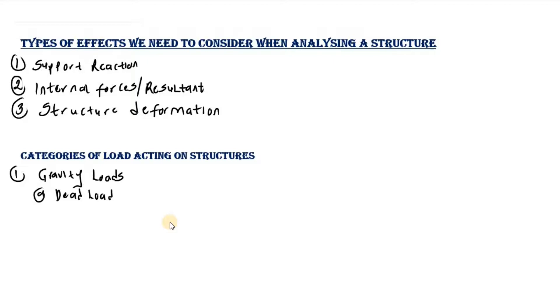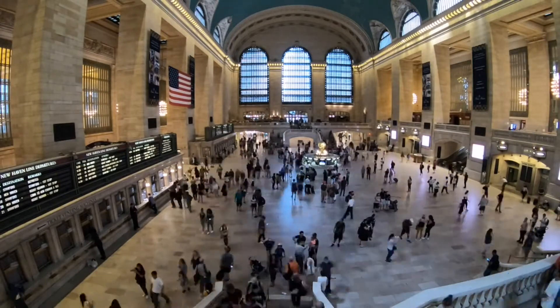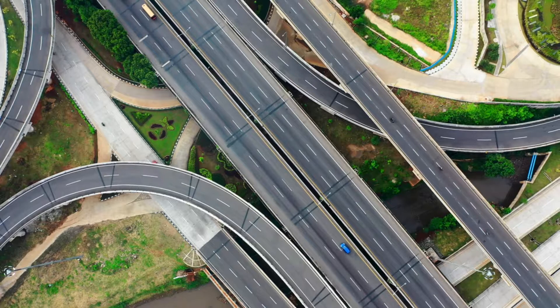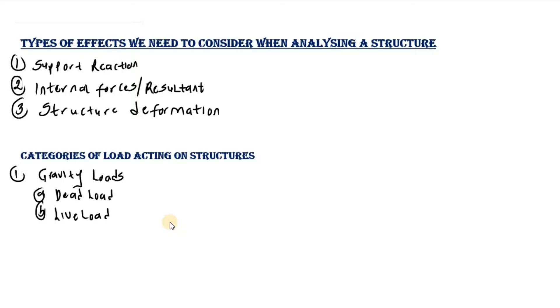the second type of gravity load we have is live load. Basically, these are also called occupancy loads - loads that move around in the structure. Like in a building, the people using the structure are an example of live load. In a bridge, the moving cars are also an example of live load. So they are moving loads that apply forces to the structure.